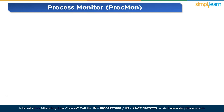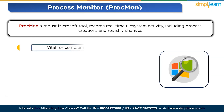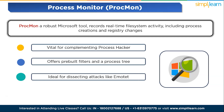The third tool is Process Monitor, or ProcMon for short. It is a robust Microsoft tool that records real-time file system activity including process creations and registry changes, and is vital for complementing Process Hacker. It captures processes swiftly created and terminated, allowing for in-depth analysis. ProcMon offers pre-built filters and a process tree, facilitating rapid identification of created processes, execution locations, and parent-child dependencies. It is particularly advantageous in analyzing malicious documents, revealing hidden PowerShell processes and encoded commands — ideal for dissecting attacks like Emotet, where malicious Word documents execute macros leading to C2 infrastructure communication and payload downloads.